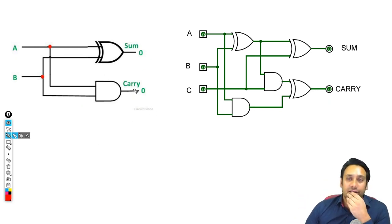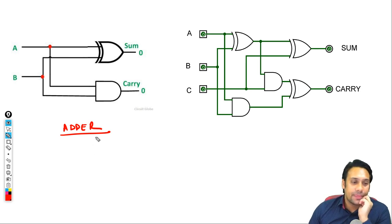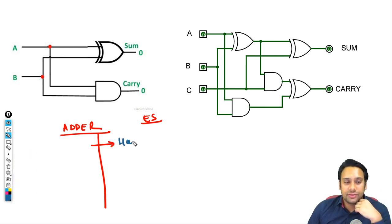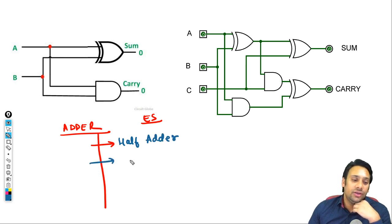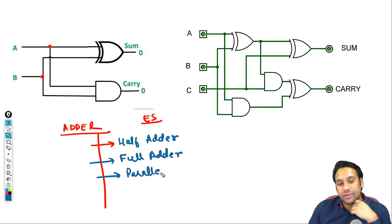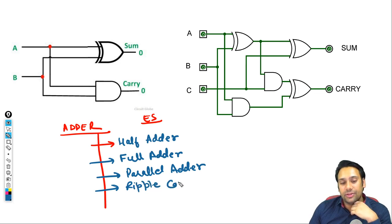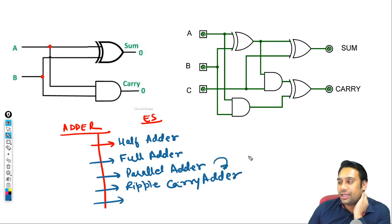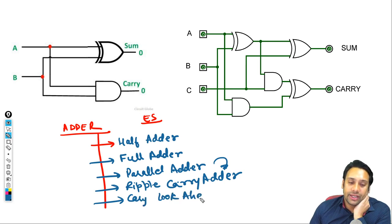Then we have a concept of adders. If you remember from your B.Tech, you have various kinds of adders — you have something called a half adder, you have a full adder, you have something called a parallel adder, then you have a ripple carry adder, then a carry look-ahead adder.